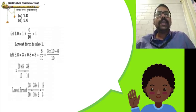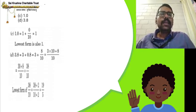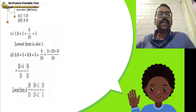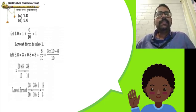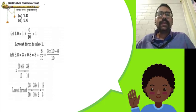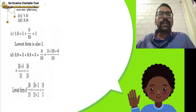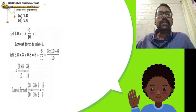How to add like fractions? Keep the denominator constant at 10 and add the numerators. So 30 plus 8 gives 38 by 10. To reduce to lowest form, we divide both numerator and denominator by 2. We get 19 by 5, since 2 19s are 38 and 2 5s are 10.